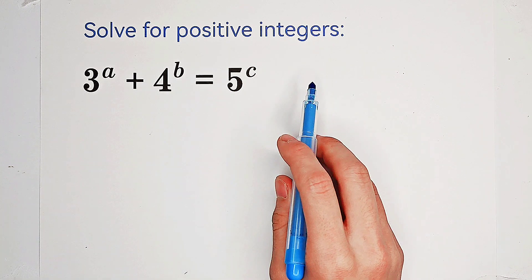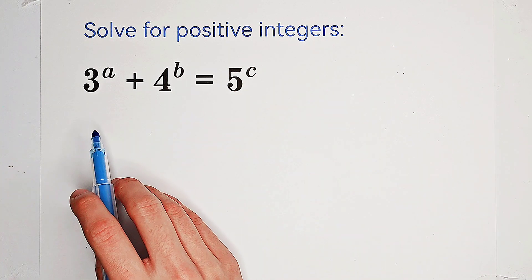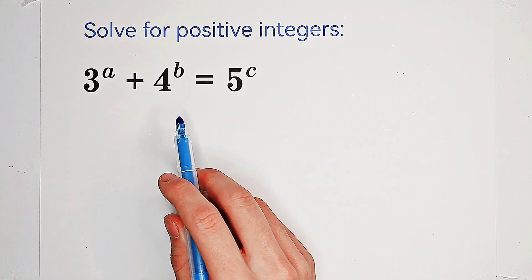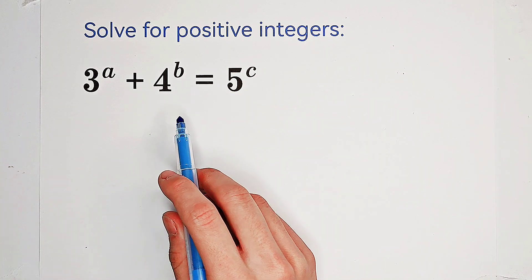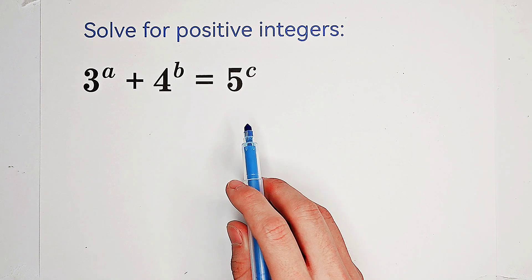Solve for positive integers a, b, and c such that 3 to the power of a plus 4 to the power of b equals 5 to the power of c.